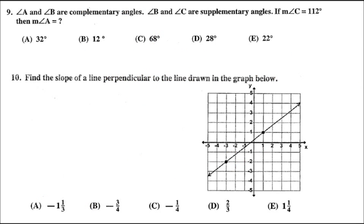Number nine, angle A and angle B are complementary angles. Angle B and angle C are supplementary angles. If the measurement of angle C is 112 degrees, what is the measurement of angle A?